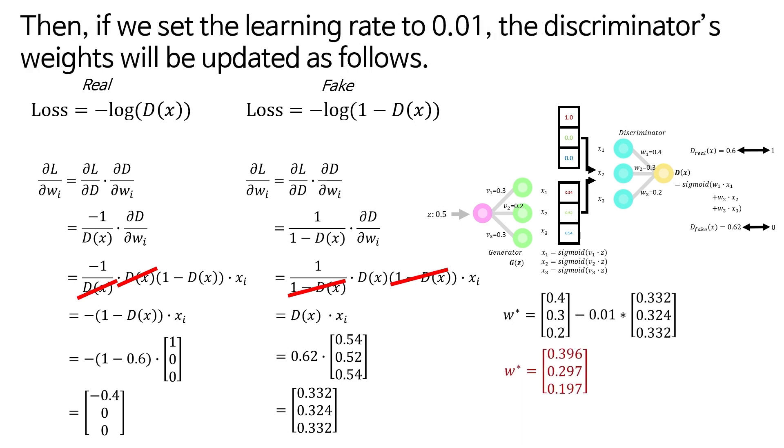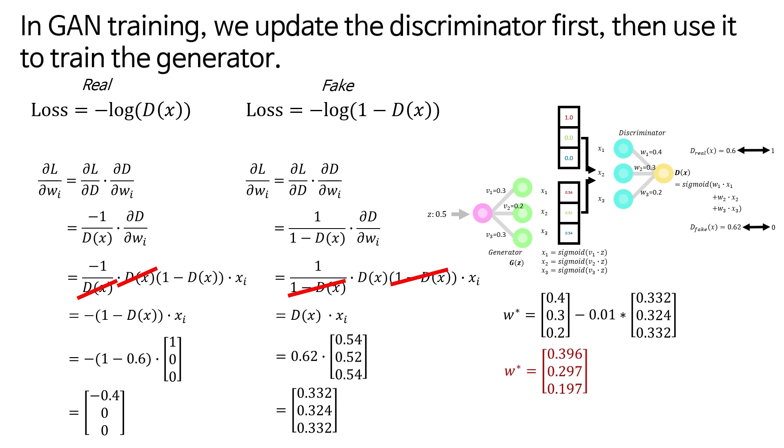Then, if we set the learning rate to 0.01, the discriminator's weights will be updated as follows. In GAN training, we update the discriminator first, then use it to train the generator.